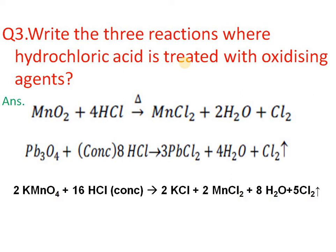The reactions of hydrochloric acid with oxidizing agents: MnO₂, Pb₃O₄, and KMnO₄ are strong oxidizing agents. When concentrated HCl reacts with MnO₂, it gives MnCl₂, water, and chlorine. Pb₃O₄ (also known as red lead or sindoor) gives PbCl₂, water, and chlorine. KMnO₄ gives KCl, MnCl₂, water, and chlorine. In each case, chlorine goes from -1 to 0 oxidation state (oxidation), while Mn goes from +4 to +2, Pb from +8/3 to +2, and Mn in KMnO₄ from +7 to +2 — all reductions, confirming these are oxidizing agents.